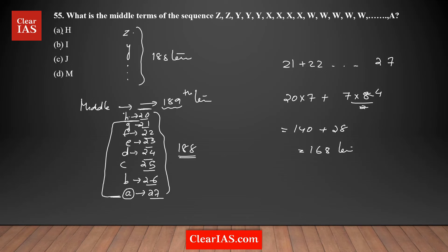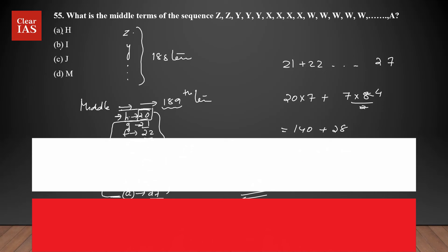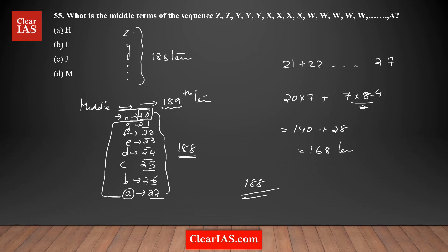Since 168 is less than 188, I need to include one more letter — H, which repeats 20 times. So 168 + 20 = 188. That means all of H is completed at the 188th term. Therefore, the 189th term is the letter just above H, which is I. I is the correct answer — option B.